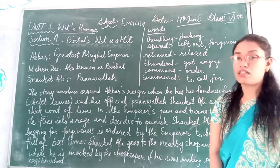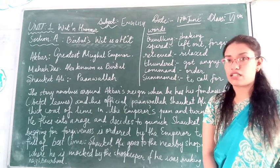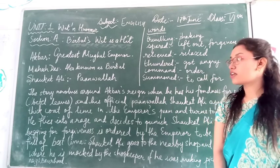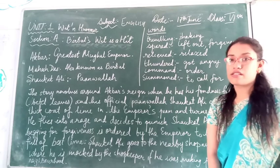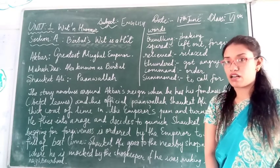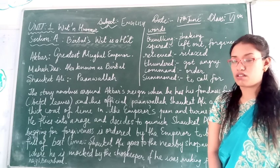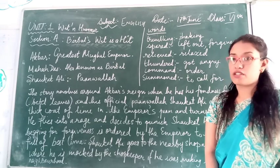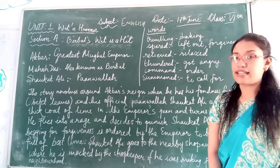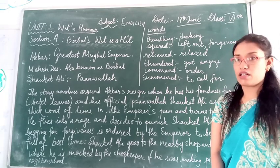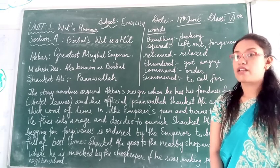Now the third character is Shaka Tali. Who is Shaka Tali? Shaka Tali is also called the official Paanwala — the official person who provides delicacies for Emperor Akbar.